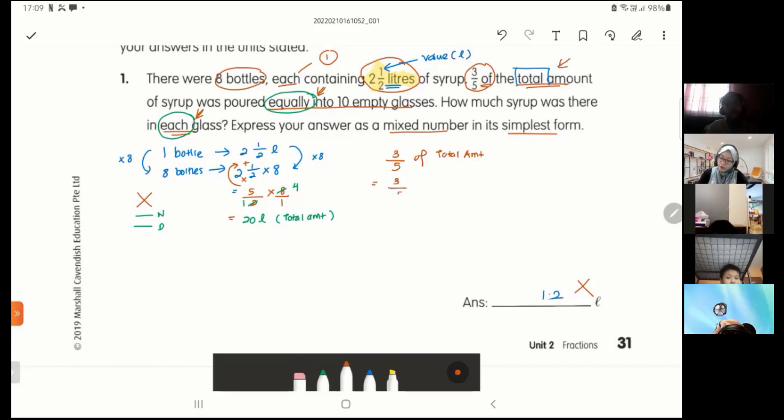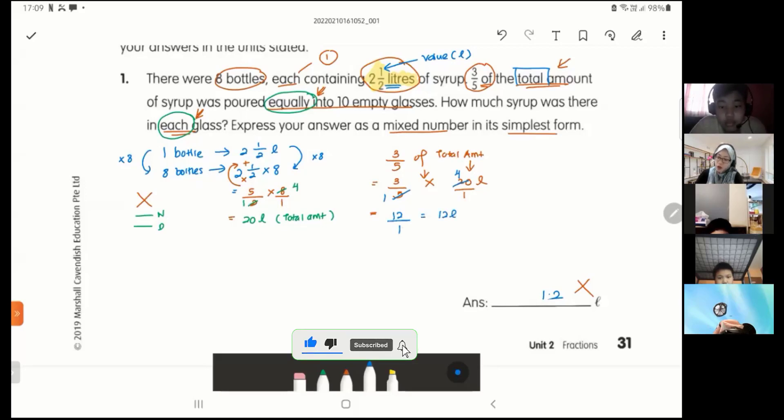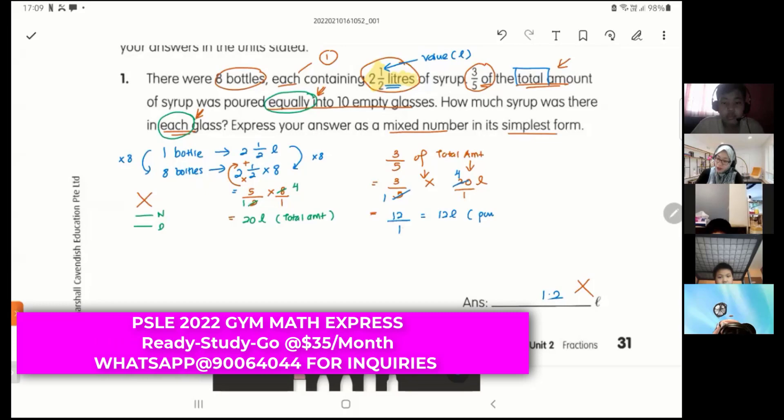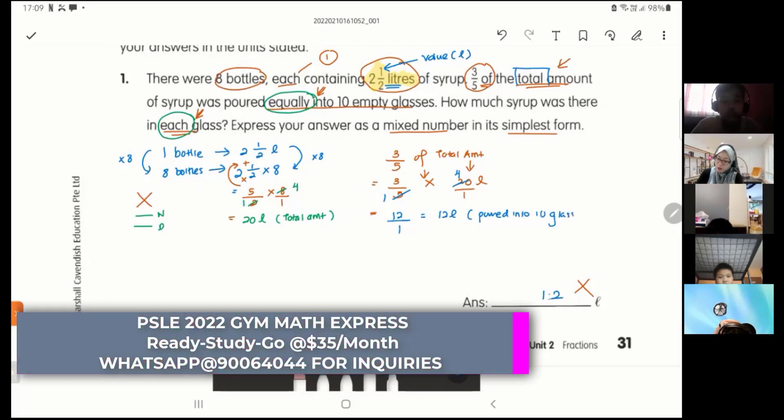Three over five of the total amount was poured. Equals to three over five of means times. The total amount is twenty liters, over one. Can I simplify crosswise? Five and twenty, divided by five is one, divided by five is four. Then I go row-wise. Three times four is twelve over one times one is one. Equals to twelve liters. So only twelve liters were poured into ten glasses.